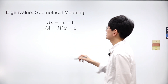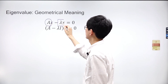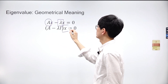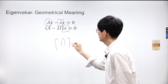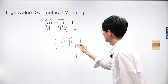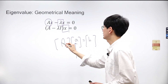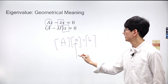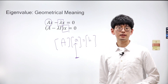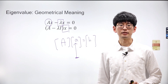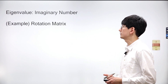Let's summarize the geometric significance of eigenvalues and eigenvectors. Consider matrix A with eigenvalues and eigenvectors. When you multiply matrix A by one of its eigenvectors, the direction of the resulting vector remains unchanged, although its length may vary. The length of the resulting vector is determined by the eigenvalue corresponding to the eigenvector. It's important to remember their geometric interpretations.